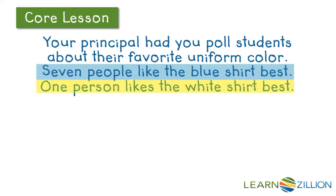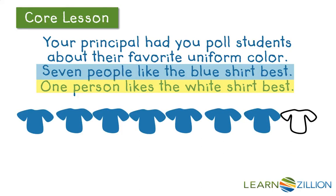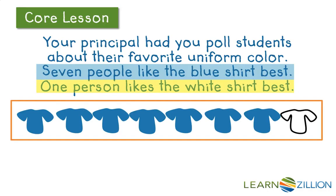Right away I don't actually see a total, but I'm going to draw a diagram to help me figure it out. I've drawn seven blue shirts and one white shirt. Now that I have this picture in front of me, I can see that altogether my total is actually implied. There are eight students that were actually polled. Given this scenario, I bet you can start to think of several ratios that you see.